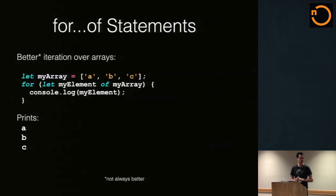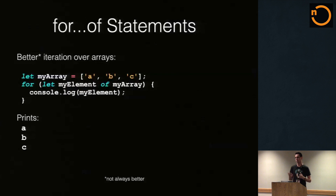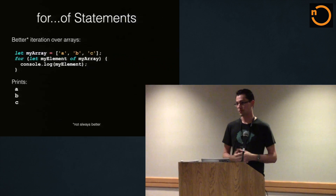Now of course you don't always want to use a for-of. Any time you need an index — say you want to modify the array or splice something out — you can't use for-of in that case because you don't get the index. But for a lot of cases with arrays, this is going to be great.